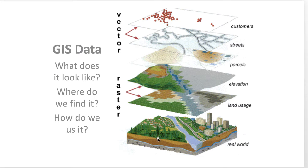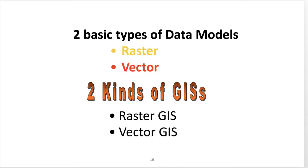What we're trying to do is take this complex globe with all the amazing things happening on it and simplify that into something usable in a computer system. When we simplify it, we can either generalize that information into cells — little pixels — and make that a raster, or we can generalize it into points, lines, and polygons and have that as a vector. We combine those layers to form a geographic information system.